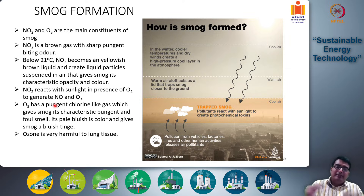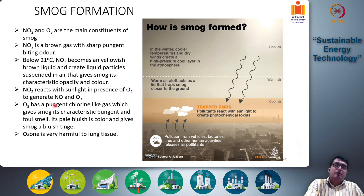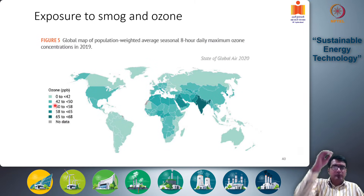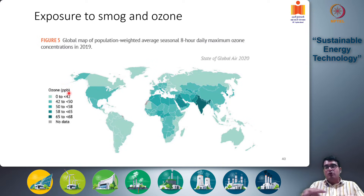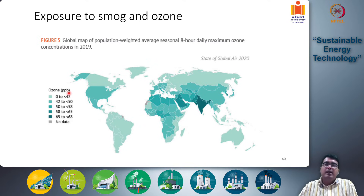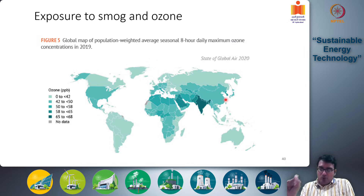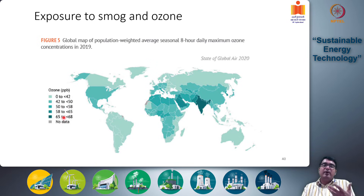That explains how smog forms, why it particularly forms in winter, and what toxic gases and liquids are present in it. From the State of Global Air report published in 2020, a map shows the distribution of smog particle exposure and ozone concentration. This surface ozone concentration serves as a surrogate for smog occurrence. India has the largest concentration of ozone close to the surface — about 65 to 68 parts per billion — indicating a lot of smog formation, also seen in the Middle East.